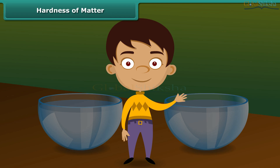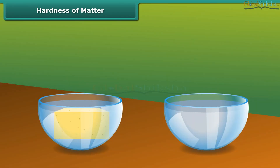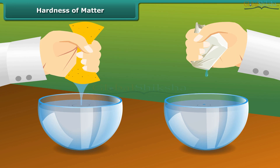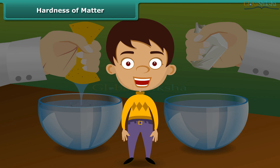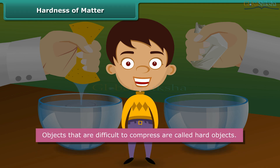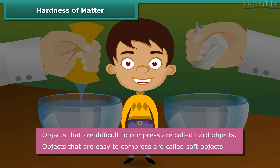Let us perform a small activity to understand the concept of hardness or softness of material. Take a sponge soaked in water, and a stone drenched in water. Try to squeeze both to remove water. You are able to squeeze the sponge, but you cannot squeeze the stone. Objects that are difficult to compress are called hard objects. Objects that are easy to compress are called soft objects.